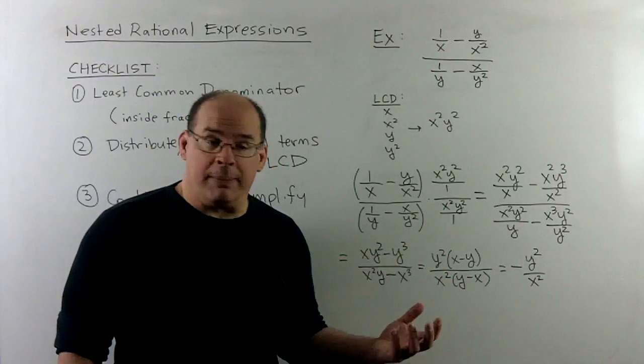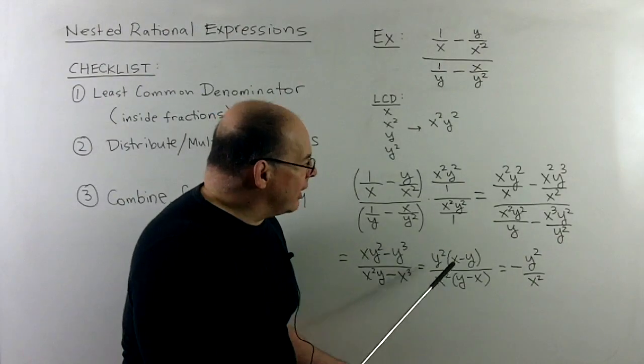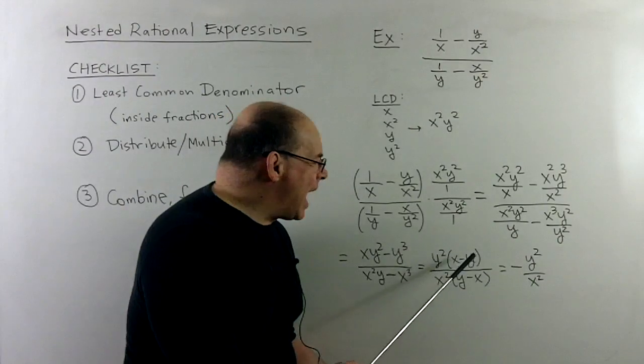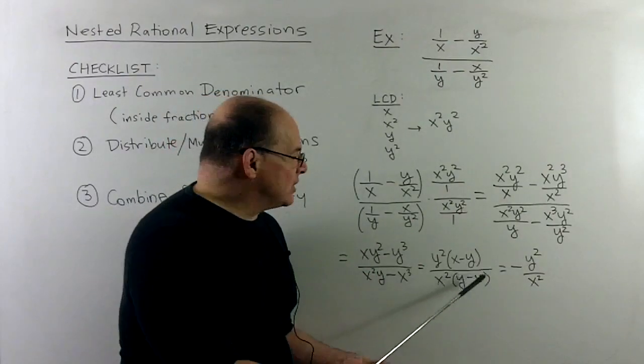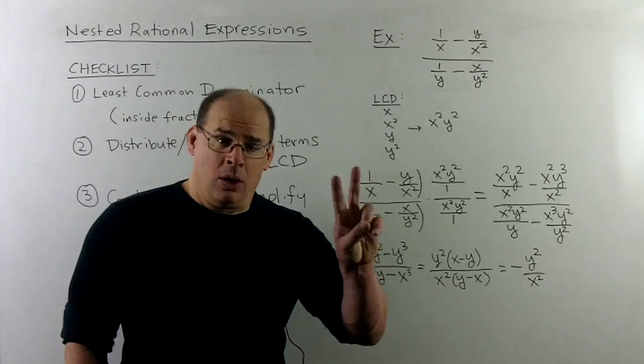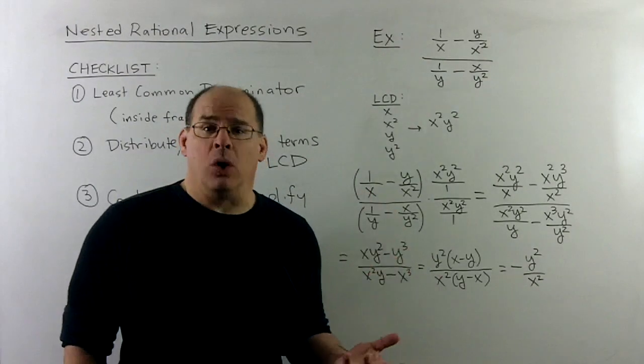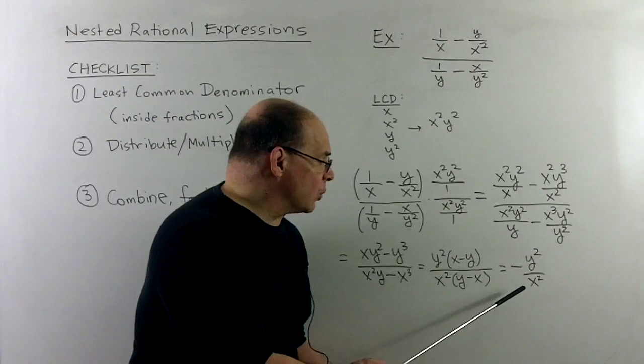We could factor out greatest common factors. So that's going to give me a y squared over an x squared. And then next to that, it's going to be an x minus y, y minus x. Then recall, if we have something of this form, so an a minus b over a b minus a, they're in the wrong order in one part, that's just going to go to minus 1. So here we'll get minus y squared over x squared.